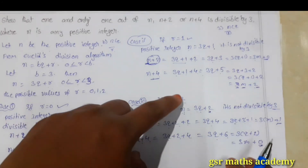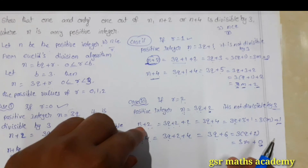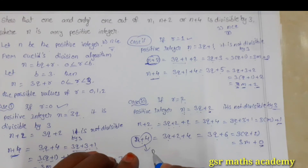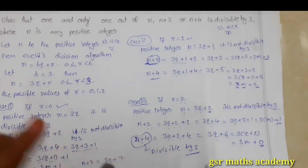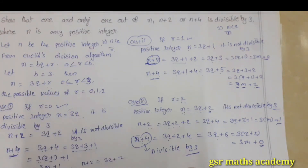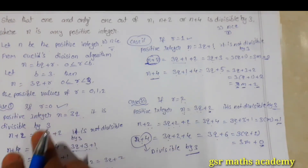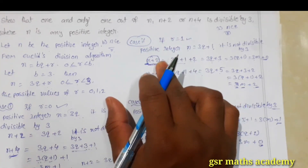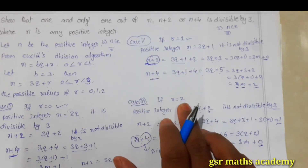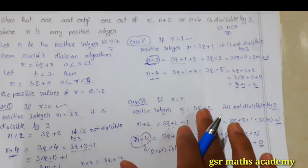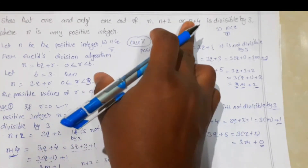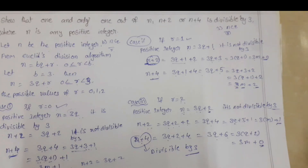That means, if r is equal to 2, out of n, n plus 2, and n plus 4, only one number, n plus 4, is divisible by 3. Therefore, in these three cases, out of the three numbers, only one number is divisible by 3. If r is equal to 0, only n is divisible by 3. If r is equal to 1, only n plus 2 is divisible by 3. If r is equal to 2, only n plus 4 is divisible by 3. We can conclude that out of n, n plus 2, and n plus 4, only one number is divisible by 3.